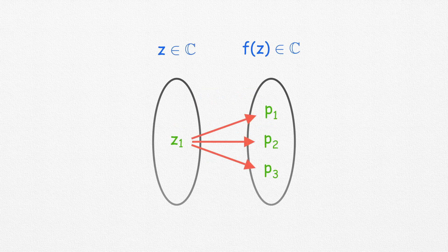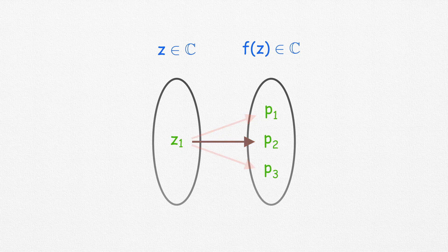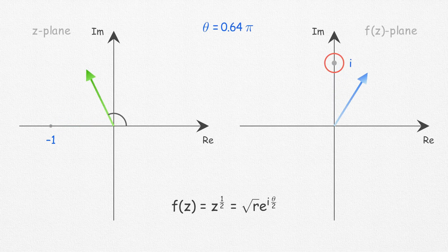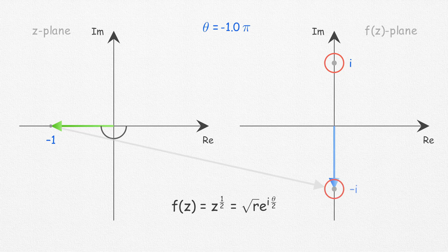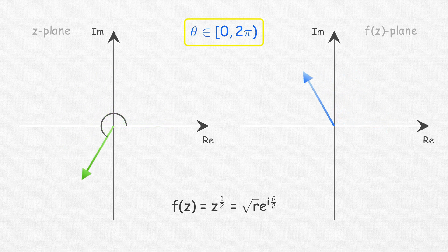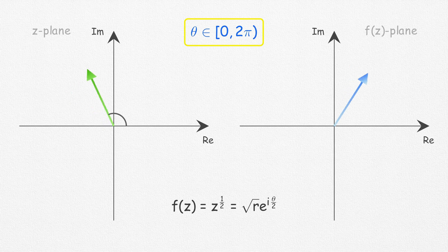As we discussed earlier, function by very definition should be single valued, and to resolve this ambiguity we come up with the concept of principal branch. If one loop in the z-plane doesn't result in reaching the same point in the f(z)-plane, we limit the argument of z for that function such that it restricts the function to take up different values corresponding to the same value of z.